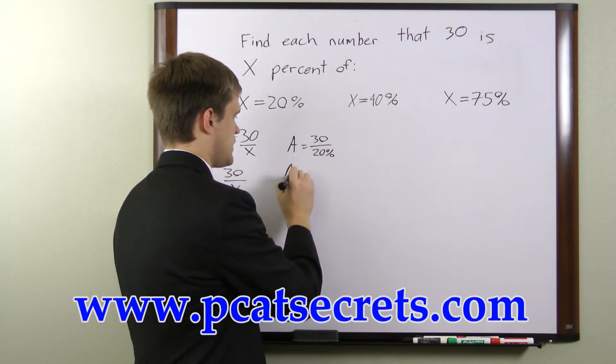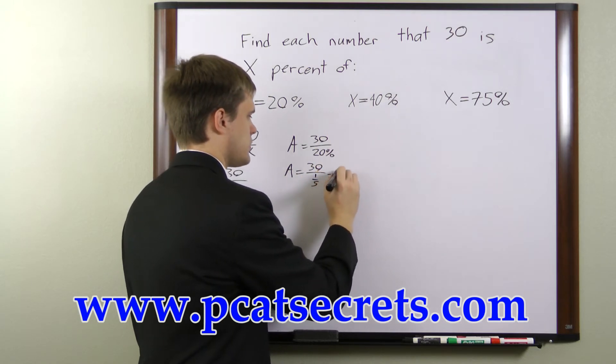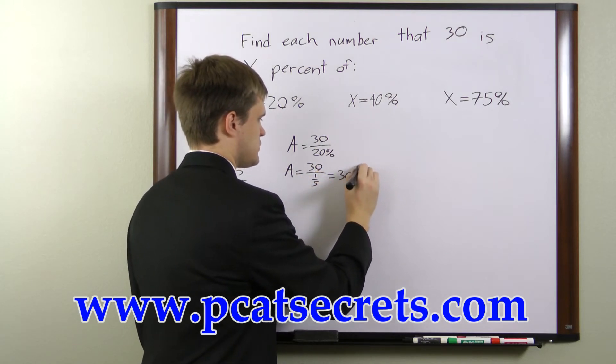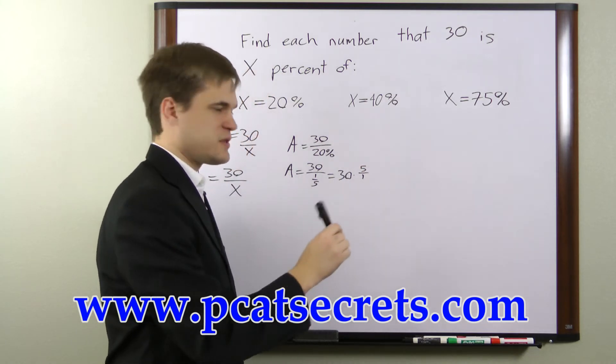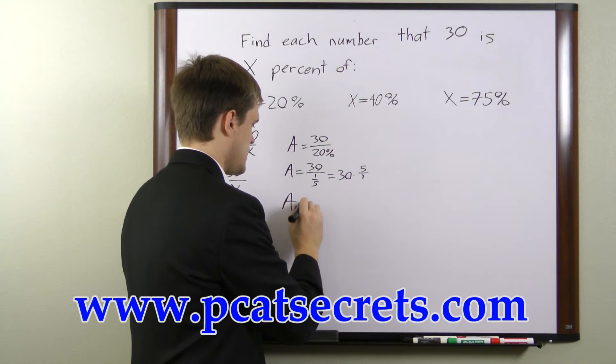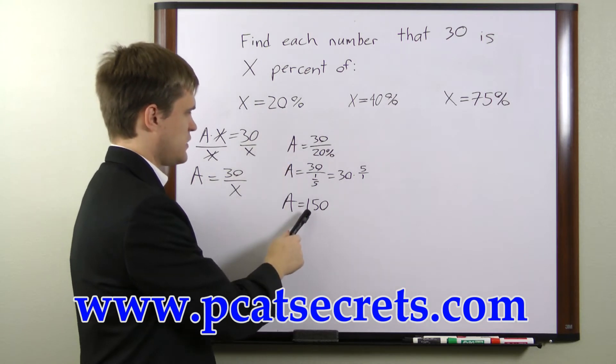So we can say that a equals 30 over 1 fifth or 30 times 5 over 1. Now if we multiply this out, what we find is that a equals 150. So 30 is 20 percent of 150.